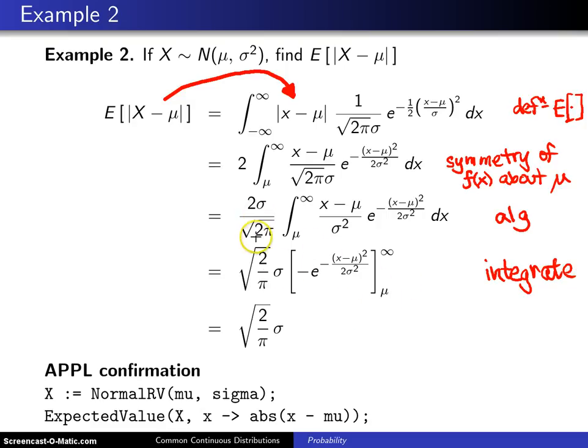Notice the 2 divided by the square root of 2 is replaced with a square root of 2 here. And when you plug in infinity, you get e to the minus infinity. That's going to be 0. And when you plug in a mu here, you get e to the 0 power. That will be a 1, and the negatives will cancel. So you just get the square root of 2 over pi times sigma.